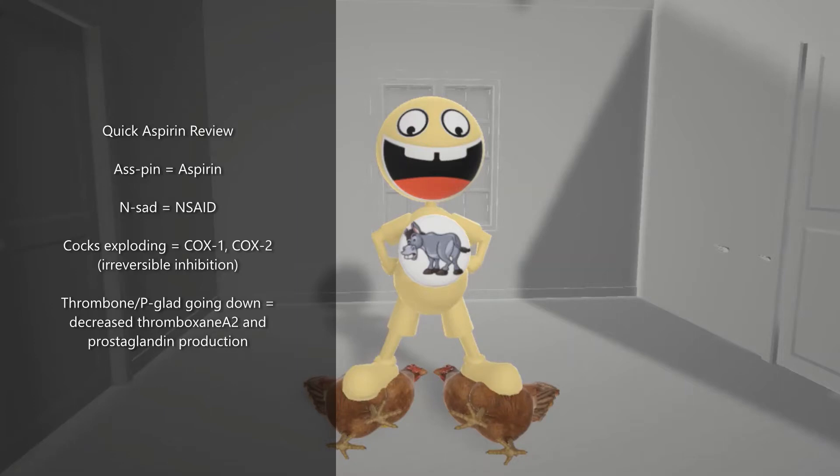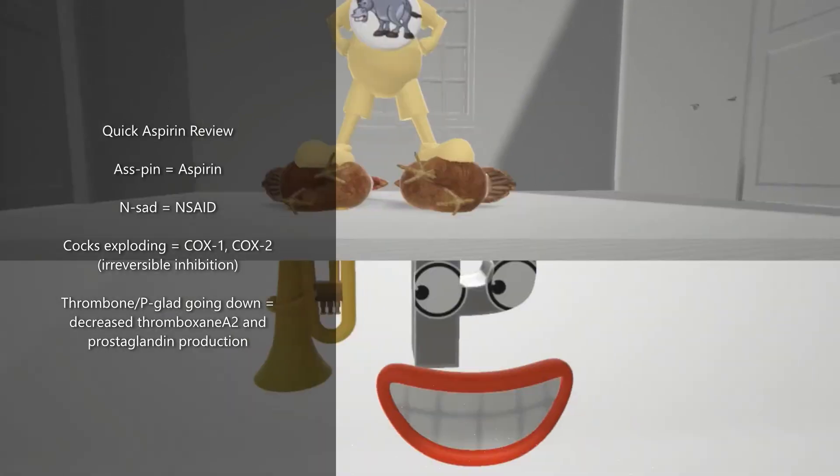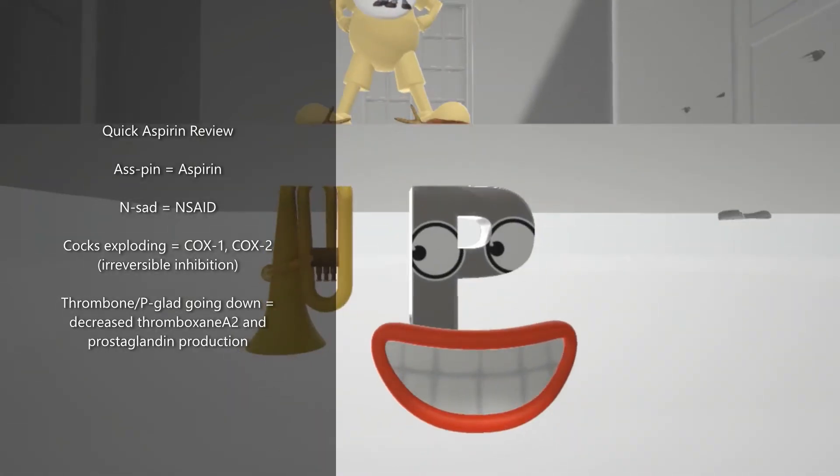As we mentioned in our aspirin video, aspirin is an NSAID, and specifically, it irreversibly inhibits COX, represented by this guy who's standing on these chickens here, the cocks, and they exploded. And this led to decreased thromboxane A2 and decreased prostaglandin production, represented by the trombone and the pea that's glad, going down.